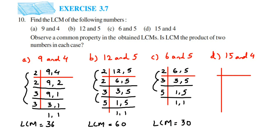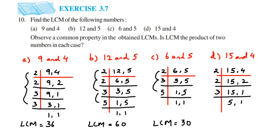The last question: LCM of 15 and 4. They don't share a common table, so start with 2: 15 doesn't go, so write it down. 2×2=4. Next, 2×1=2. Then 15 goes in the next prime, which is 3: 3×5=15. Then 5×1=5. LCM = 2×2×3×5: 2×2=4, 4×3=12, 12×5=60. So LCM of 15 and 4 is 60.